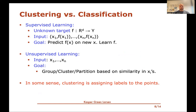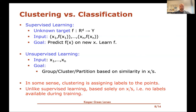Going back to the comparison between supervised and unsupervised learning: in unsupervised learning, at least in clustering, a clustering algorithm is really assigning labels to points without seeing examples of what an unknown target function should tell them. There is no unknown target function, but it is really a way of labeling the data points. Unlike supervised learning, it's just based on the feature vectors xi — we don't see any labels during training, yet we still have to label the data into different groups or clusters.